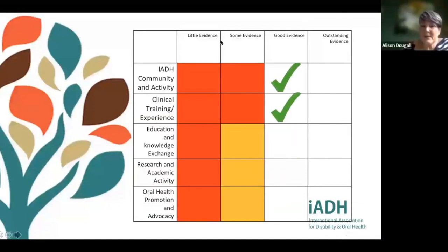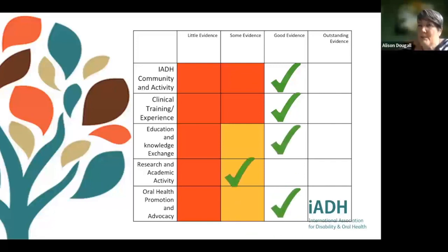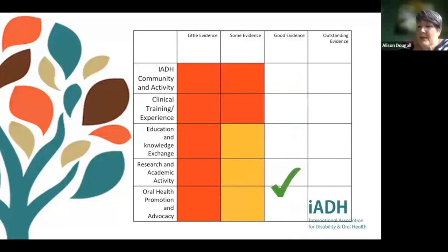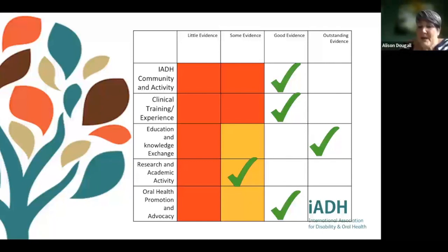When marking, we would love to see good evidence in each area, but we don't expect everyone to excel at everything. Some people will have a small amount of evidence in teaching or research. We have agreed that if somebody has a small amount in one area, they can compensate by being outstanding in another — perhaps outstanding in IADH activity having attended 20 conferences and served on a committee, or outstanding in education but less active clinically.